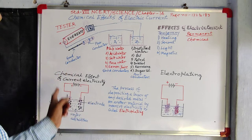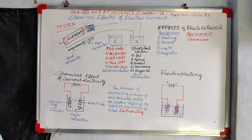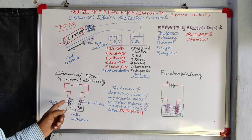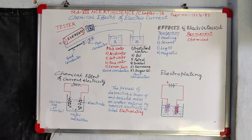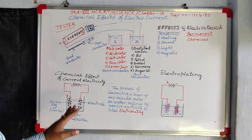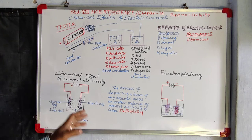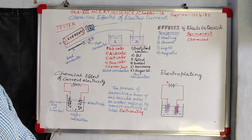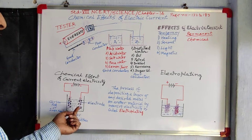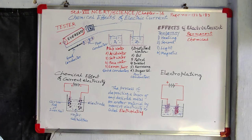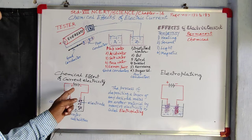So this is the arrangement to see the chemical effect of electric current. If we allow electricity to pass through this arrangement, what we can see after some time is some gas bubbles are produced and they are gathering around the electrodes.